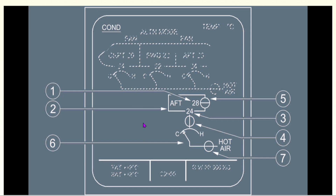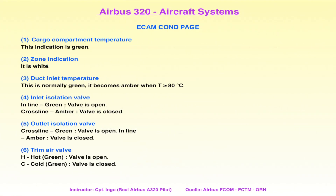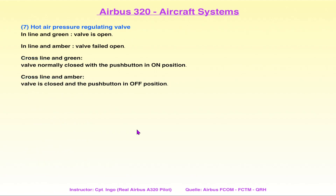Die Ventilsymbole auf dem ECAM sind die gleichen, die wir von anderen Systemen kennen: Grün mit durchgezogener Linie bedeutet das Ventil ist offen; Amber bedeutet geschlossen. Hot Air Pressure Regulation Valve – inline and green: valve is open. Das sind alles Sachen, die wir kennen; dasselbe Prozedere wie immer.